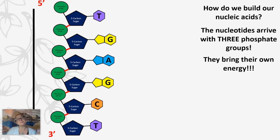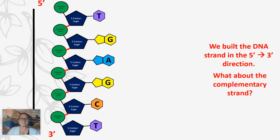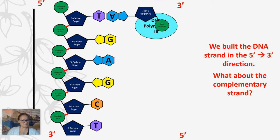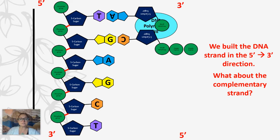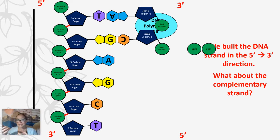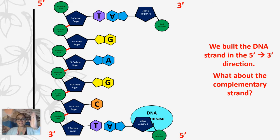This growing chain is built from the five-prime end towards the three-prime end — it's built in the five-prime to three-prime direction. Now DNA is anti-parallel, meaning the two strands run in opposite directions. If you were to build a new strand in the same direction as the previous strand, the energy would not be in the right place to build the bond. DNA polymerase 3 cannot harvest that energy to build the phosphodiester bond in the three-prime to five-prime direction. So instead, we build in the opposite direction, five-prime to three-prime.